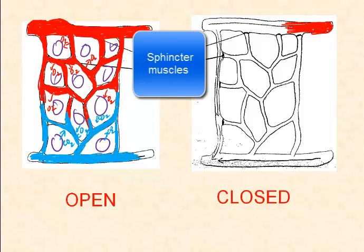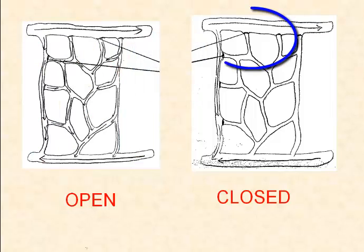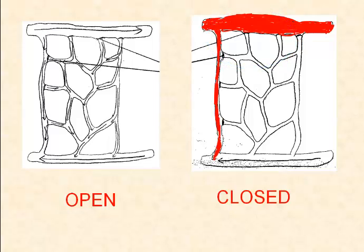This is because the sphincter muscles allow the passages into the capillary bed to remain open. When the sphincter muscles are closed, blood is diverted away from one capillary bed, this one, to others.